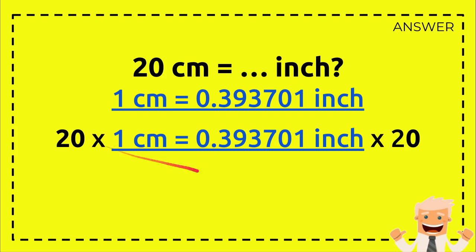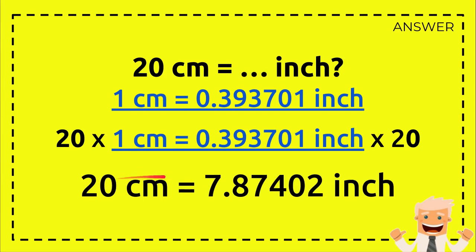Okay, so 20 times 1 equals 20 centimeters, and 0.393701 times 20 equals 7.87402 inches.